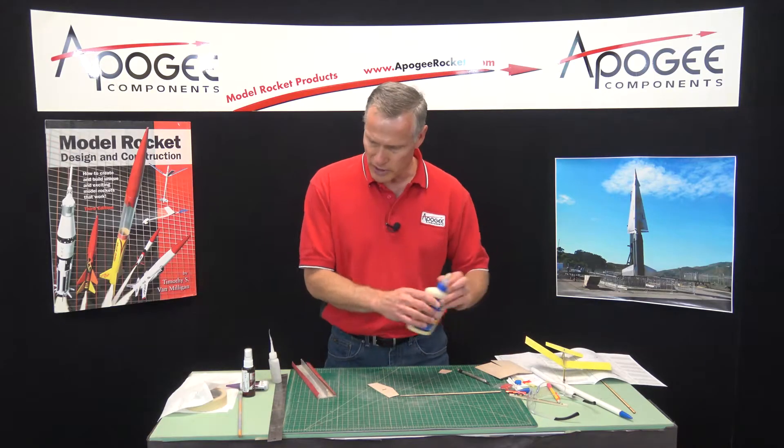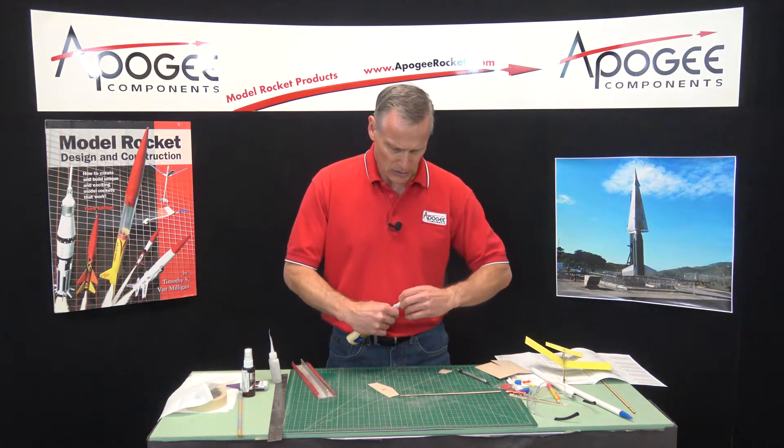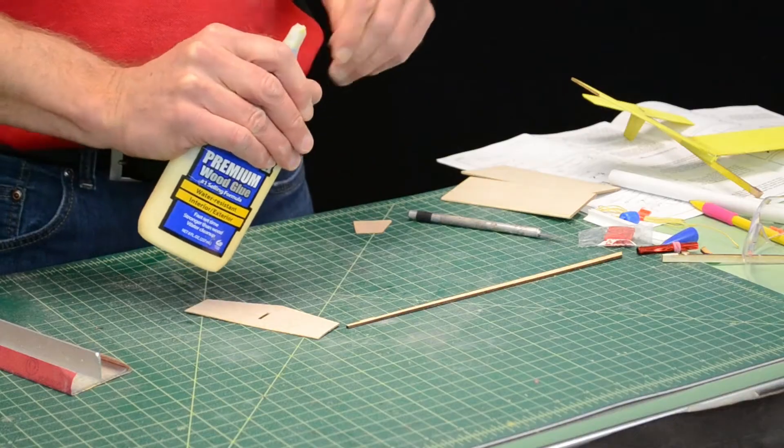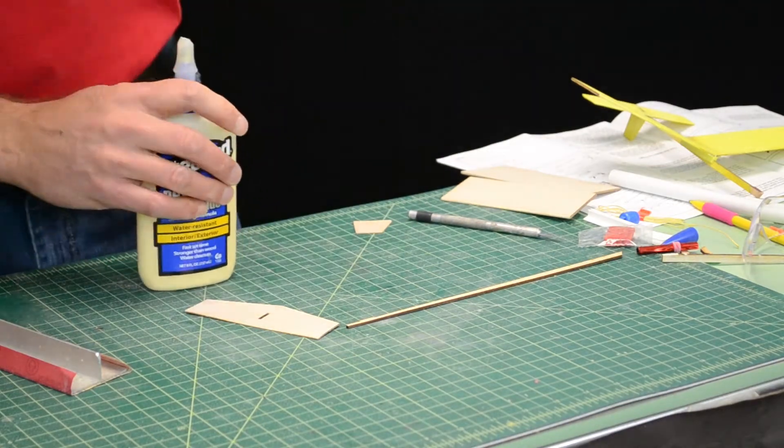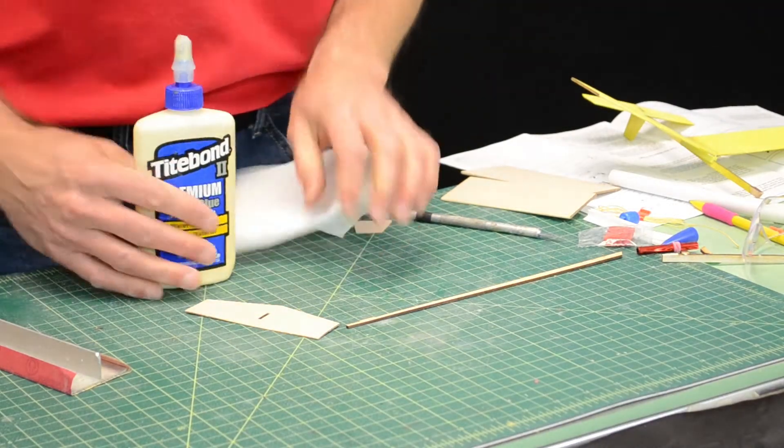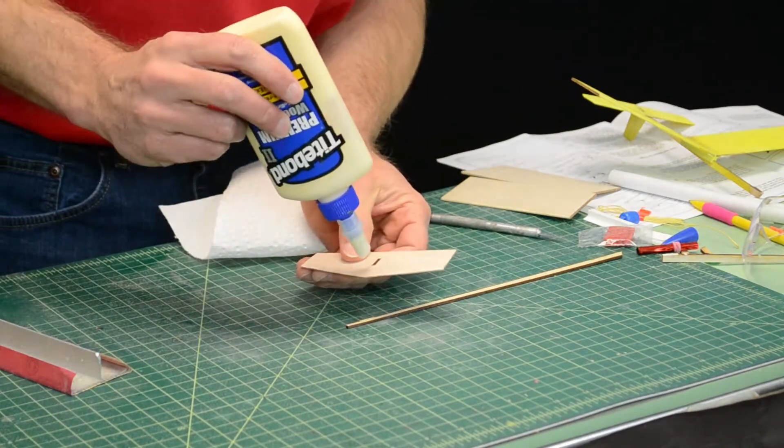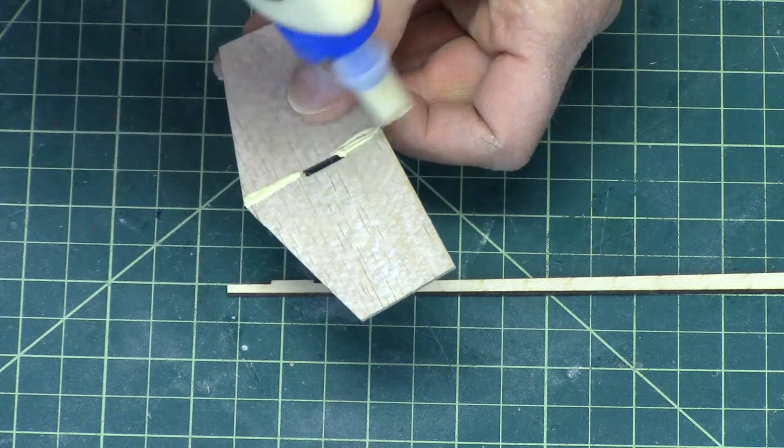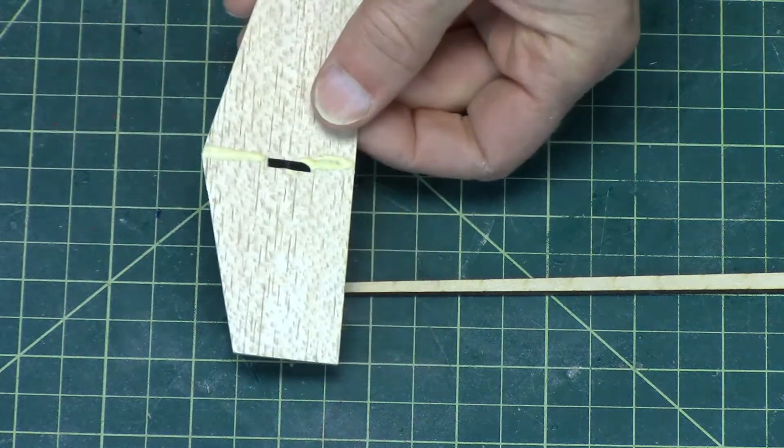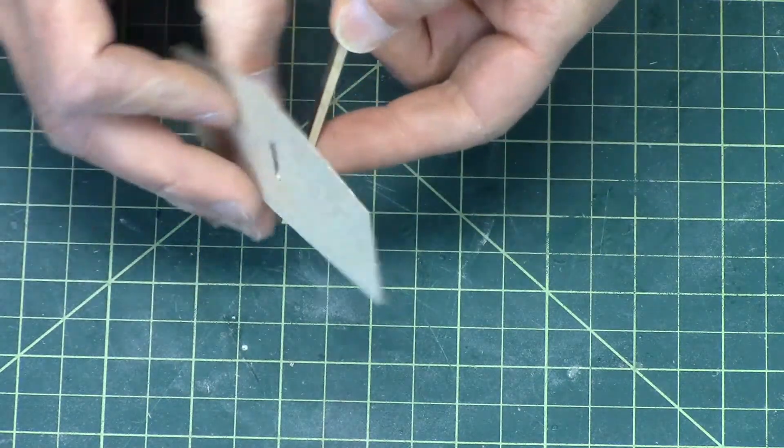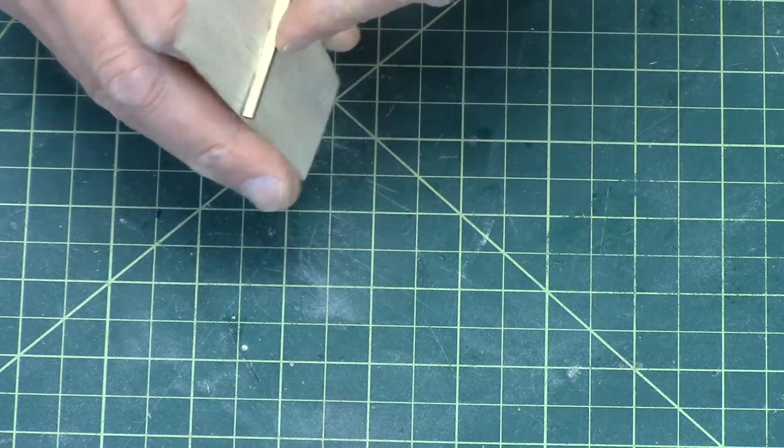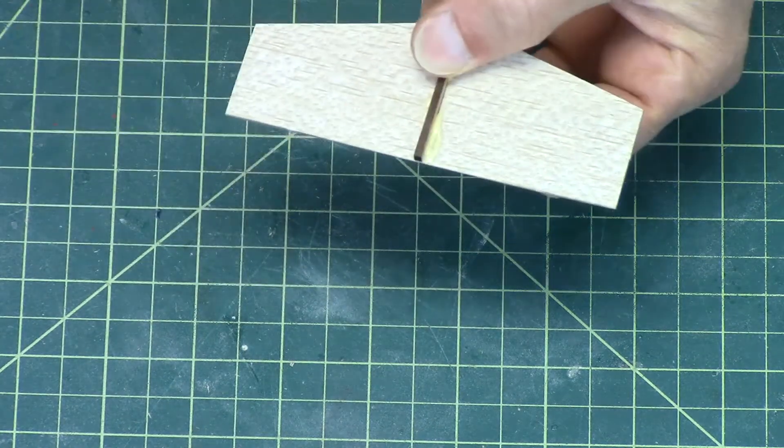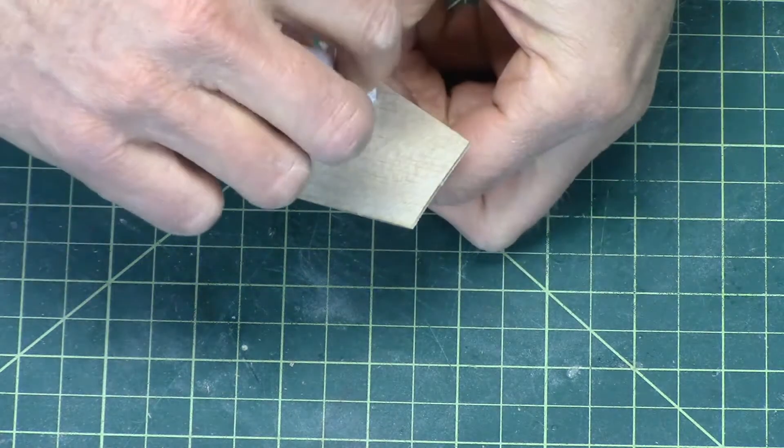We're going to use wood glue to glue that. Have some paper towels handy. We're just going to run a little bit of glue here and here. Then that's going to go into the tab. You want to press and hold, and then wipe off any excess glue that oozes out.